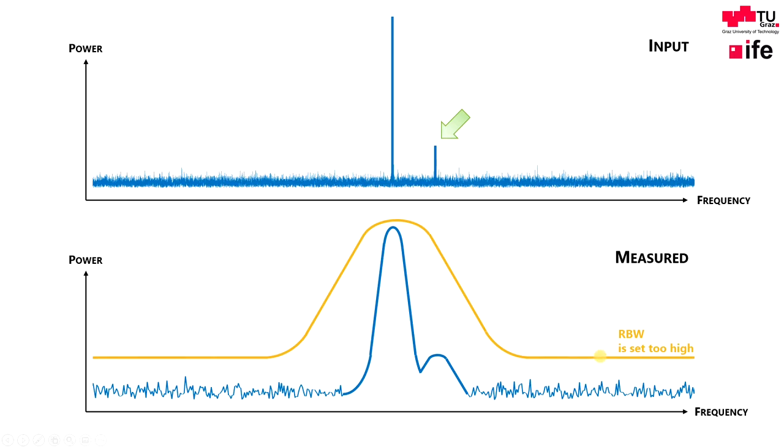So the wider resolution bandwidth brought us two things. First, the noise floor gets higher because more total power is located within the wider bandwidth. And second, we cannot resolve both frequencies anymore. Therefore, we want to set the resolution bandwidth as narrow as possible as that would give us the most detailed frequency resolution.